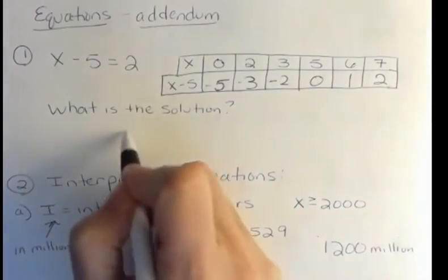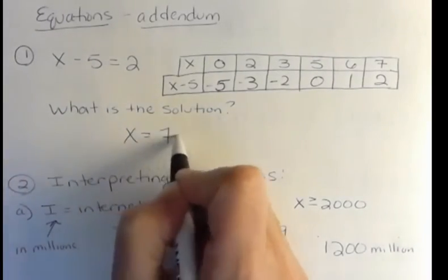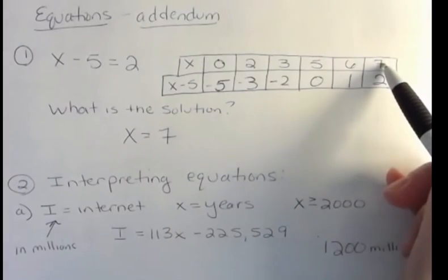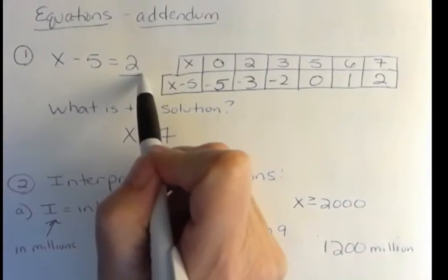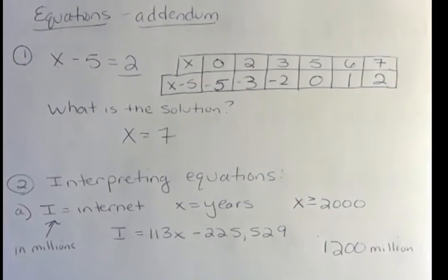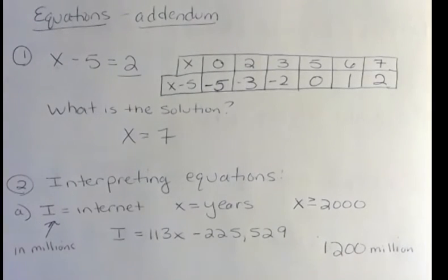So the solution is x must be 7, because when you plug 7 in, you finally get this answer. It's kind of a strange way to look at an equation, but what they're trying to show you is there's only one solution. No other number will work. We could try a bunch, but there's only going to be one that actually makes this true. So that's what they're looking for there.